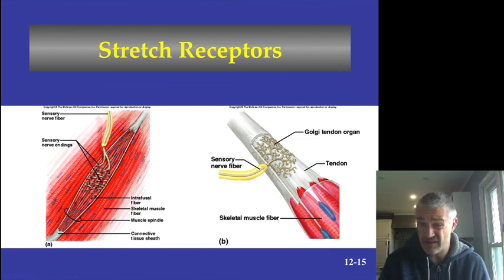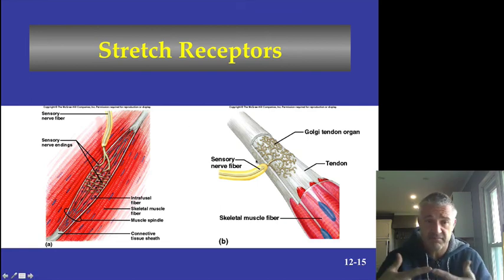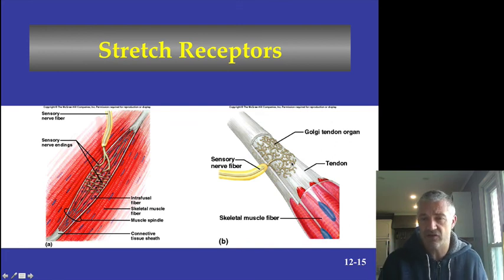Because muscle spindles and Golgi tendon organs fatigue at different rates, they can sometimes send mismatched signals. For instance, during exertion the muscle may contract trying to prevent damage — this is what causes calf cramps during running. That is the overview of the general senses. Next, we'll move into the special senses: taste, smell, hearing, sight, and the vestibular sense of equilibrium.